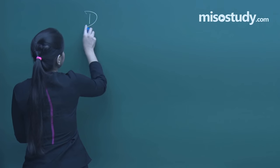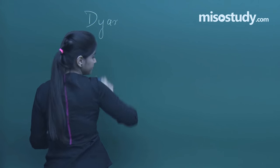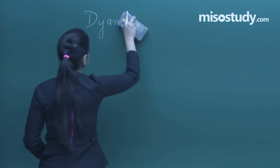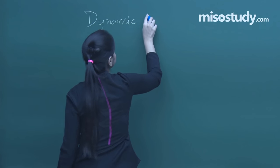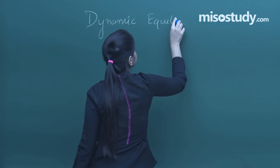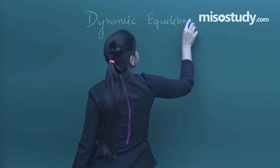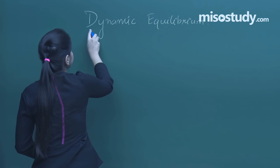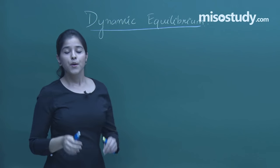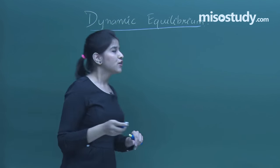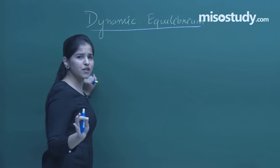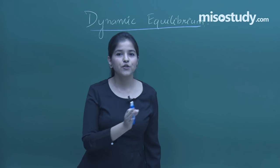So what is tautomerism? As I told you, it's a special kind of dynamic equilibrium. It is nothing but dynamic equilibrium. Why is it known as dynamic equilibrium? Because here the isomers are present in equilibrium positions. Let us just take up an example, and after that I'll explain the definition.